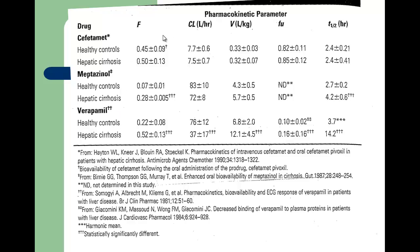Here are some other drugs with data comparing healthy subjects and patients with hepatic cirrhosis — showing bioavailability, clearance, volume, fraction unbound, and half-life. For Cefatomet, the bioavailability remains about the same, clearance is quite similar with just a slight decrease, volume is pretty similar, and fraction unbound is only a little bit increased. So Cefatomet's clearance is certainly not high extraction — in fact I'm not even sure it's cleared by the liver because there isn't really much change.